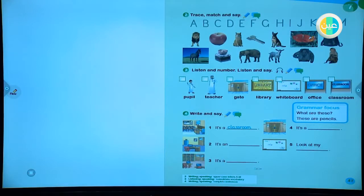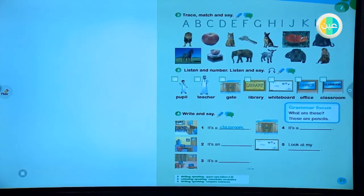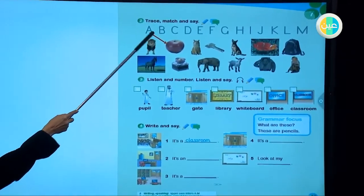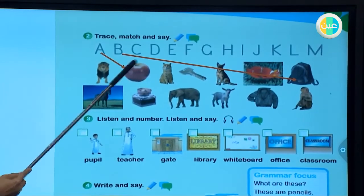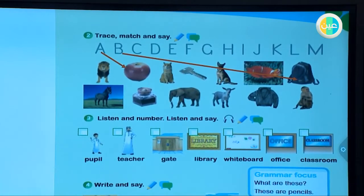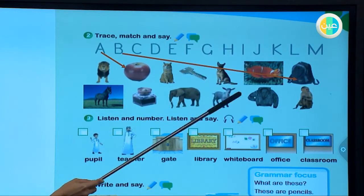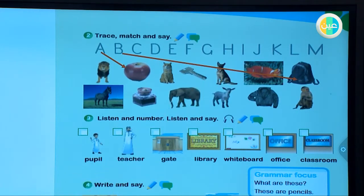Now dear, we move to page number 47 and we do number two. Trace, use your pencil and match and say. We have letters A, B, C, D, E, F, G, H, I, J, K, L, M. Look at the picture and name it and match them with the letters.